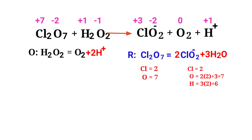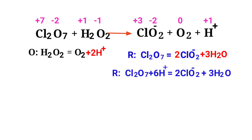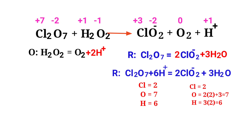To balance the oxygen atoms, you can produce H⁺ ions. Now the number of atoms are balanced in the reduction half-reaction.